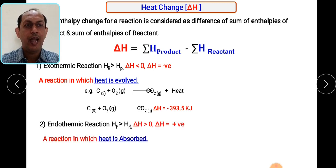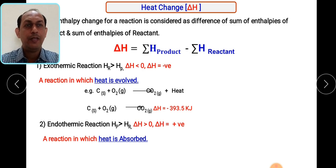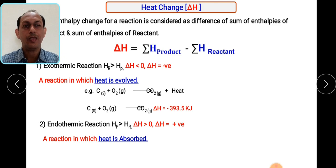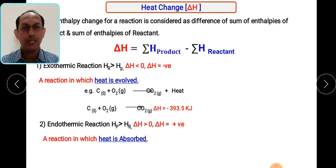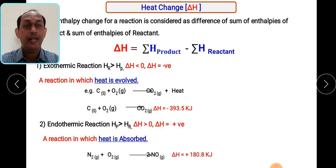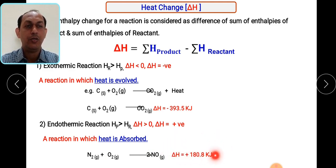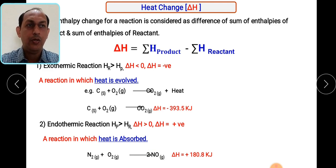In the case of an endothermic reaction, heat is absorbed from surroundings into the system. In that case, the enthalpy of products will be higher than the enthalpy of reactants, and ultimately delta H — the change in enthalpy — will be positive. So in that case we say heat is absorbed from surroundings into the system. Remember: delta H will be positive for an endothermic reaction. A positive sign means it is an endothermic reaction.